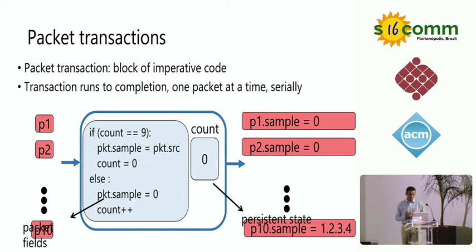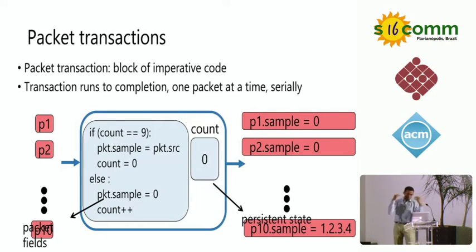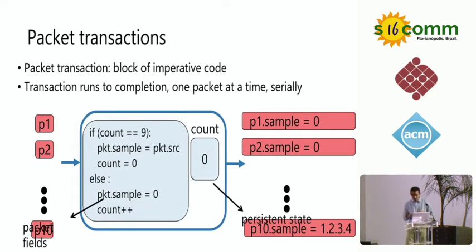A packet transaction is a block of imperative code that captures an algorithm's logic. Formally, the semantics are straightforward: a packet comes in, a transaction captures the packet processing that should happen, it updates some packet fields and some state, finishes execution for that packet, and only then moves on to the next packet. As a programmer, you have the illusion of a single packet being processed serially — almost like programming on an infinitely fast software router.